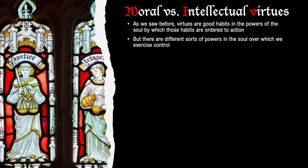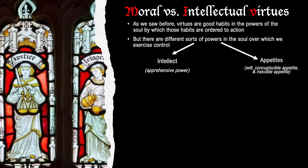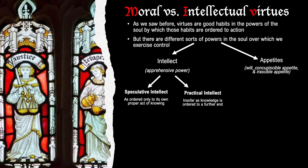There are different sorts of powers in the soul over which we exercise control. There are appetites, such as the will, the concupiscible appetite, and the irascible appetite. And there is the intellect, which is an apprehensive power as opposed to an appetitive power. Corresponding to these different powers are different virtues. The intellect can be considered in two ways: as the speculative intellect, ordered towards knowledge for its own sake, or as the practical intellect, ordered towards knowledge for the sake of some further end or goal.